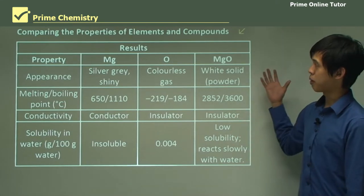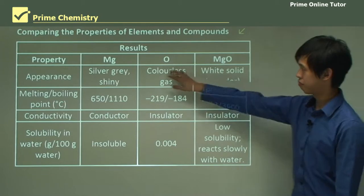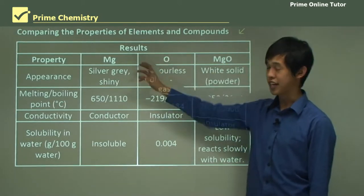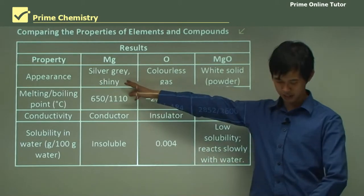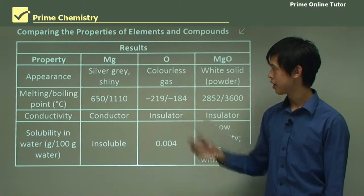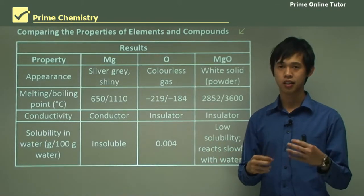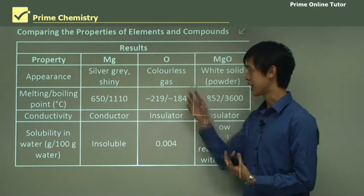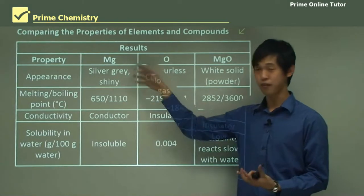So comparing the properties of elements and compounds, basically magnesium, which is here, has a silver-grey look because it's a metal. So it's shiny and lustrous. That's its appearance. The oxygen in the air, which is what we're assuming is reacting with the magnesium, is a colourless gas.